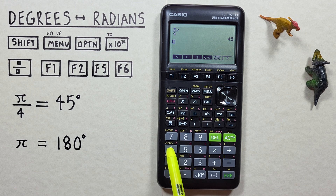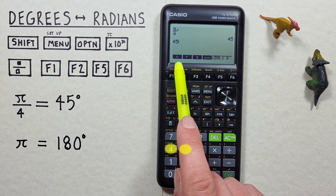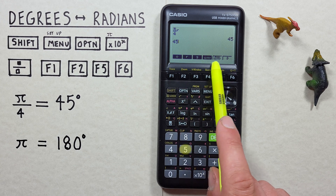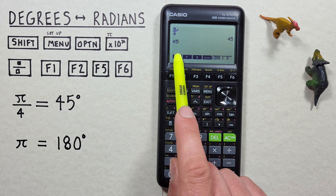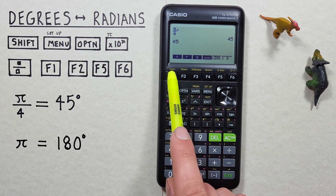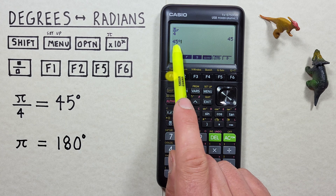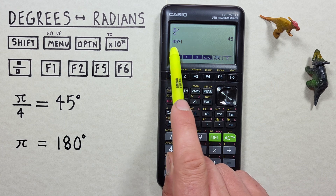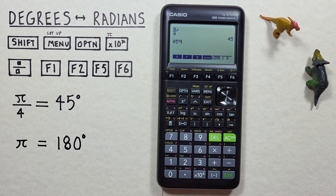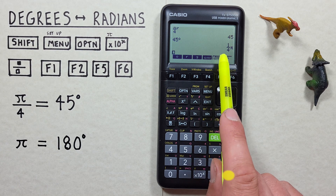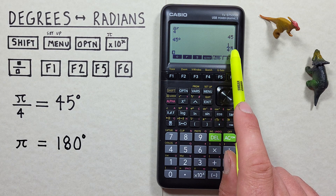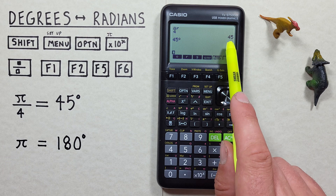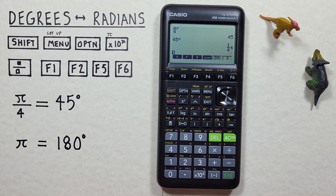Now we enter our 45 degrees. Since we're already in this angle menu, we can hit f1 for the degree symbol to tell our calculator that's 45 degrees. And then press the exe. And we see it gives us 1 over 4 pi, or pi over 4 radians.